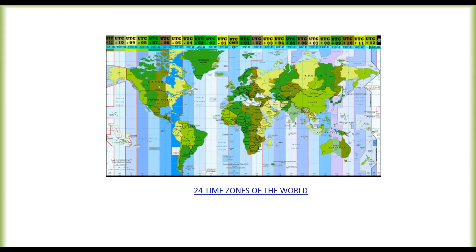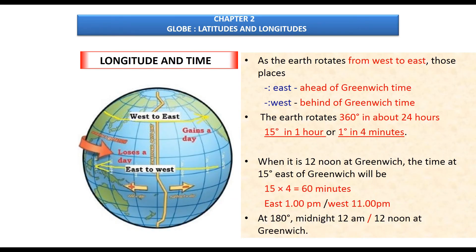The earth is divided into 24 time zones of one hour each, with each zone covering 15 degrees of longitude. So when it is 12 noon in Greenwich, the time at 15 degrees east of the prime meridian will be 15 × 4 = 60 minutes ahead — that is, 1 PM. For places to the west, it will be 60 minutes behind — 11 AM. When it is 12 noon at Greenwich, the 180-degree meridian (both east and west) will have 12 AM midnight.